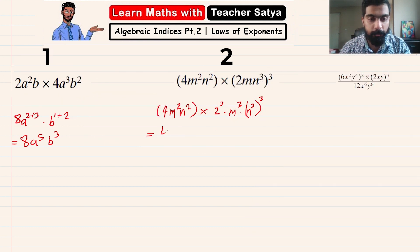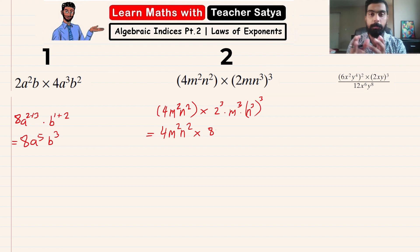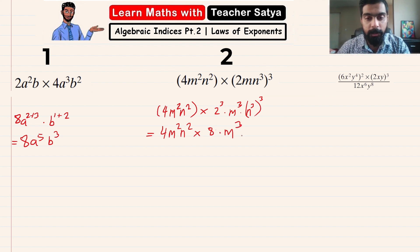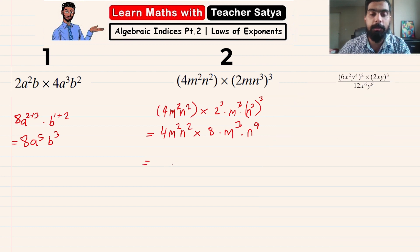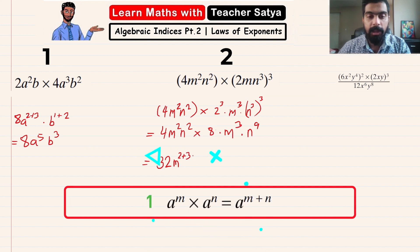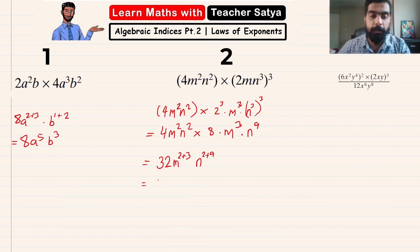We have four m squared n squared multiplied with two to the power of three, which is two times two times two, giving us eight. Many students make the mistake of writing two to the power of three as six instead of eight. This is multiplied with m to the power of three and n to the power of nine, since n to the power of three to the power of three equals n to the power of nine. Finally, four times eight is 32; m squared times m cubed gives m to the power of five; and n squared times n to the power of nine gives n to the power of eleven. The final answer is 32m to the power of five and n to the power of eleven.